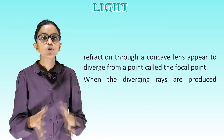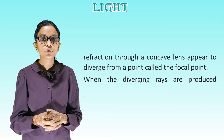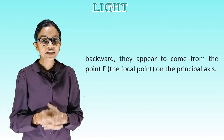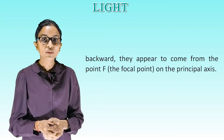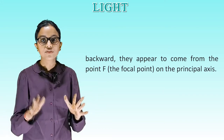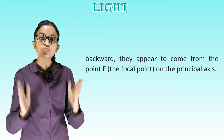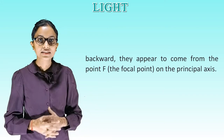When the diverging rays are produced backward, they appear to come from the point F — the focal point — on the principal axis.